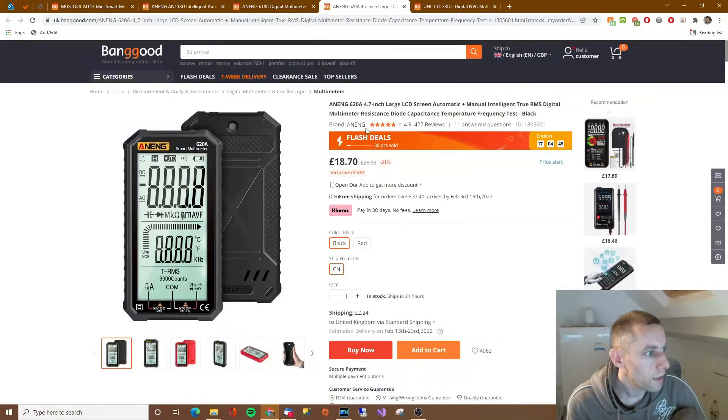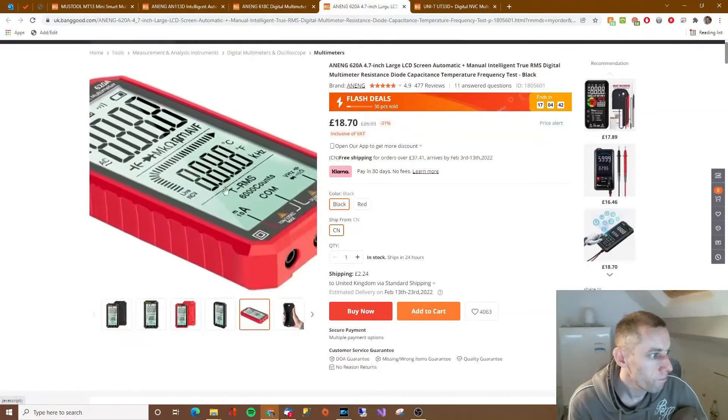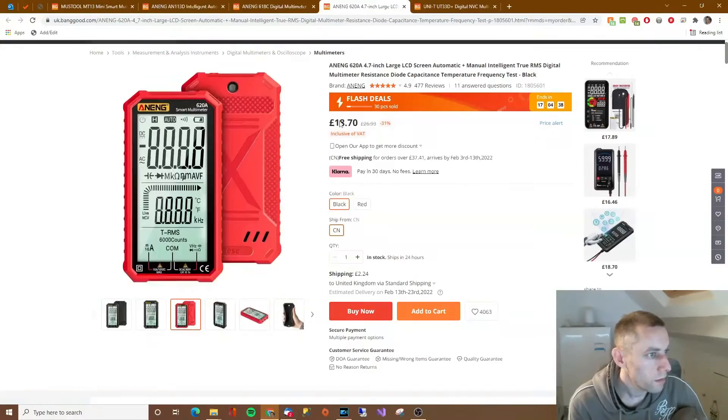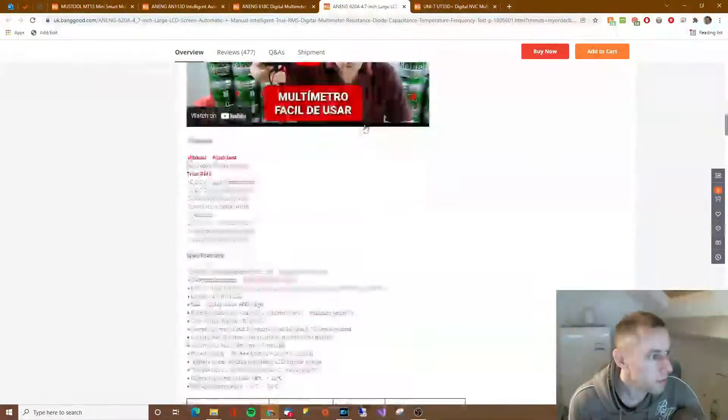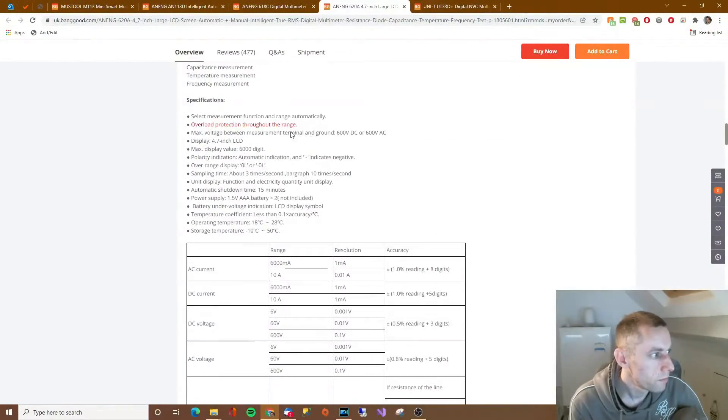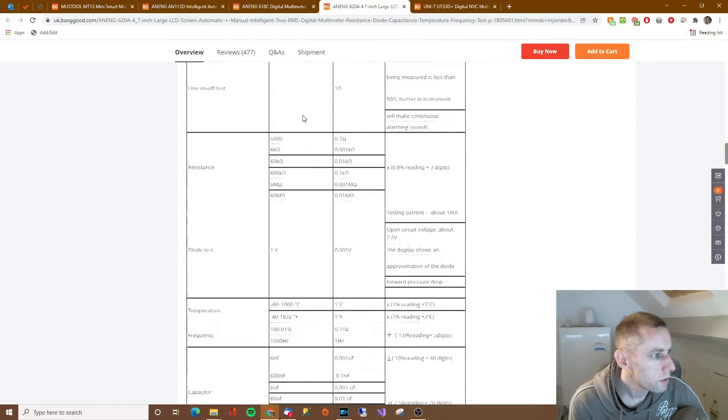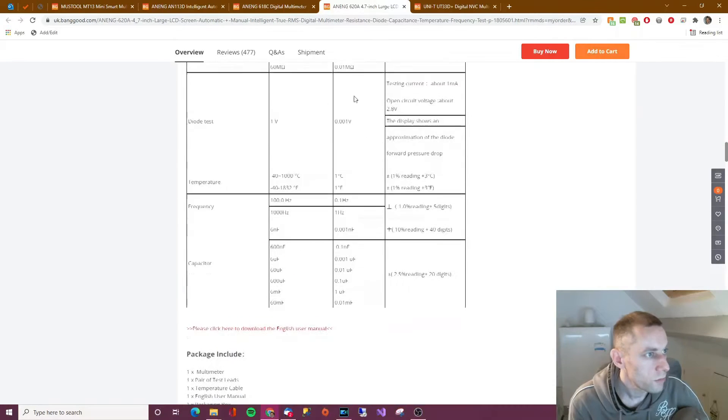We have the Anang 620A. It looks like it's a bigger one, £18.70. There's a picture of it. What does it say about this one? AC current, DC current, etc. Some more details there.